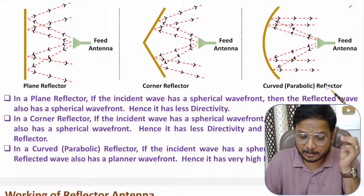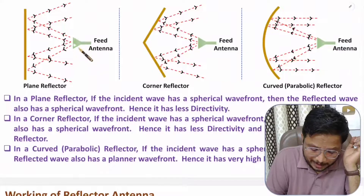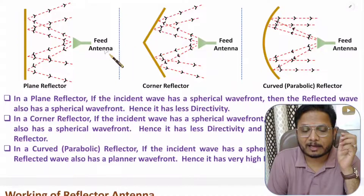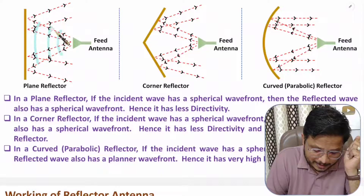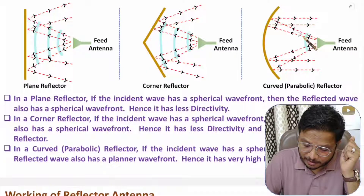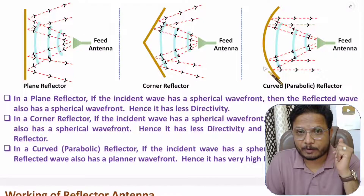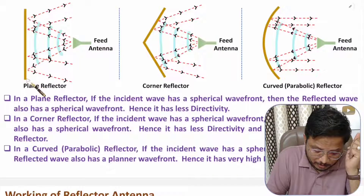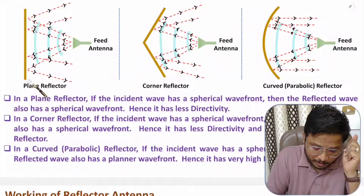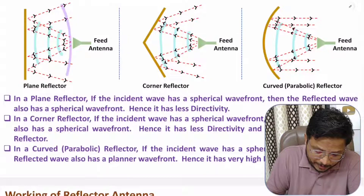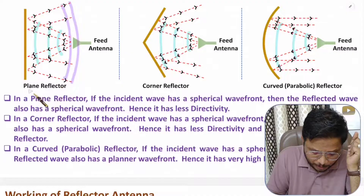In each type, we have a feed antenna — usually a horn antenna as the active element — which generates spherical wavefronts. With a plane reflector, after reflection the reflected wave still has spherical wavefronts, which gives it lower directivity. That is why we don't use the plane reflector in the majority of applications.